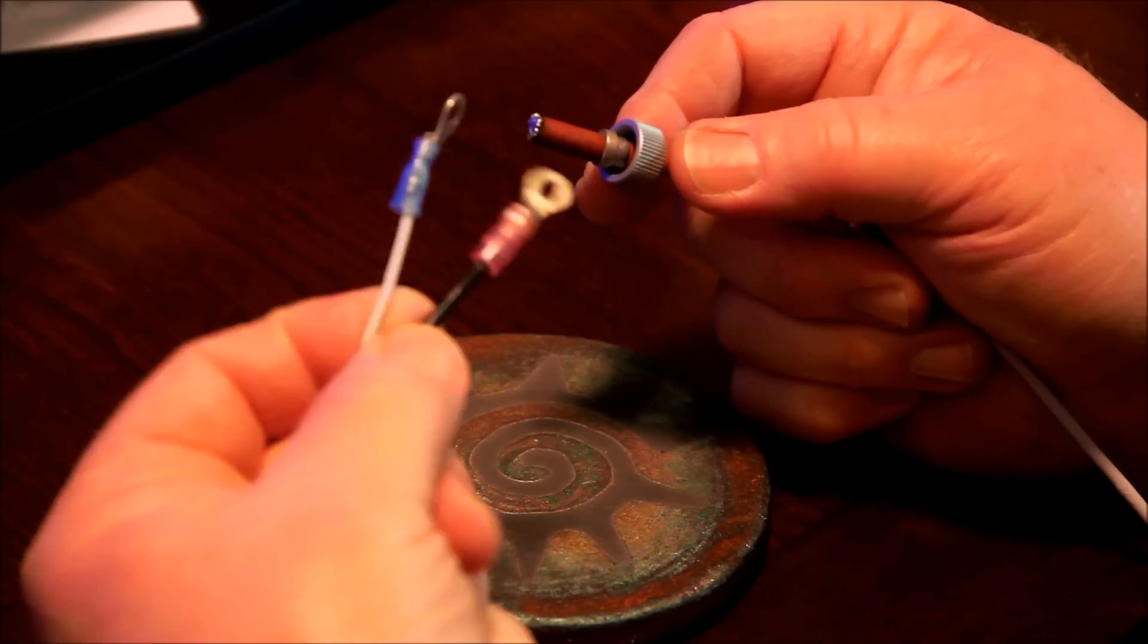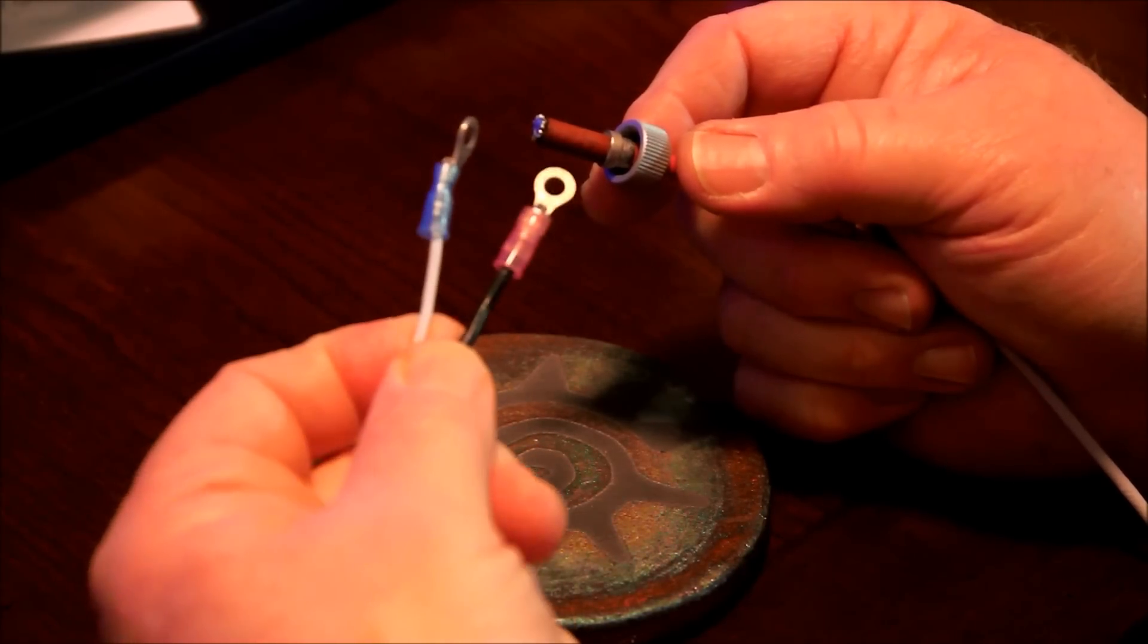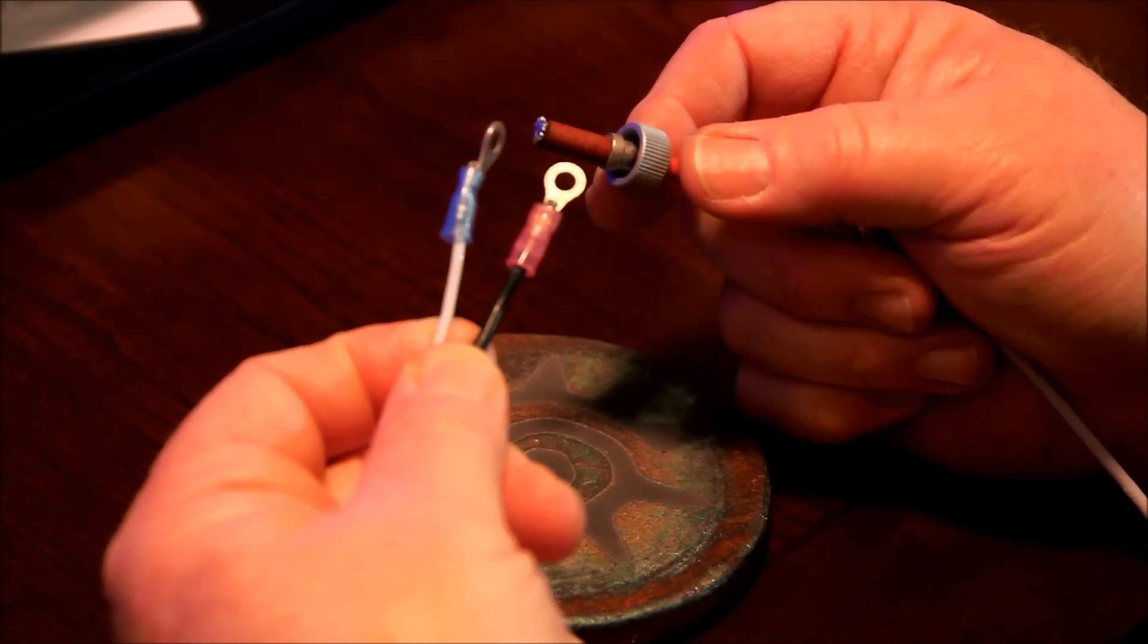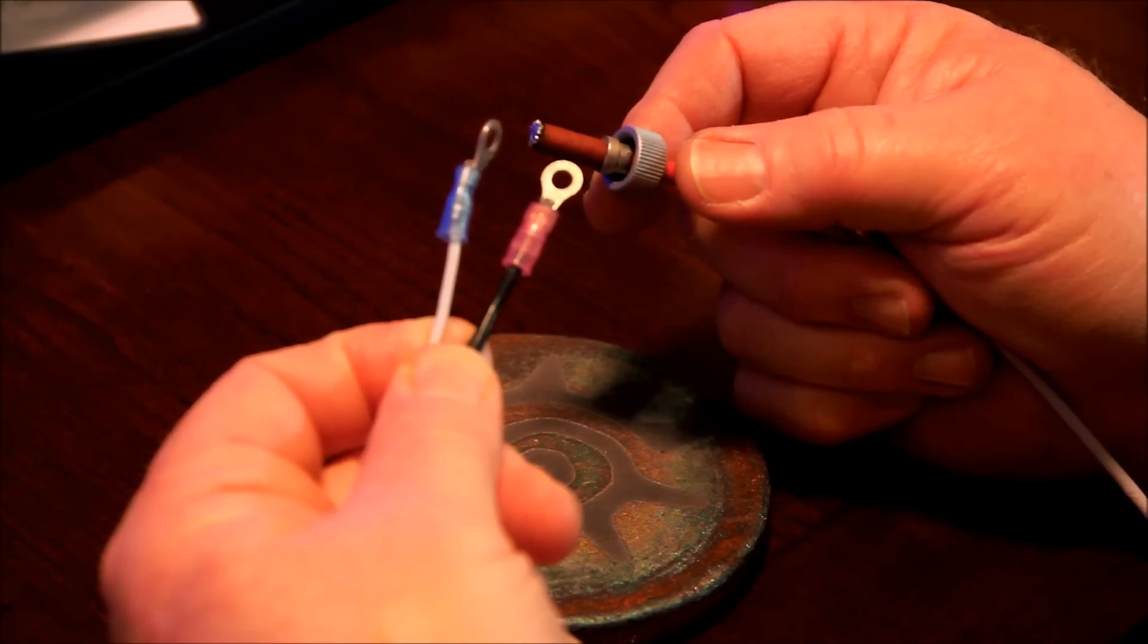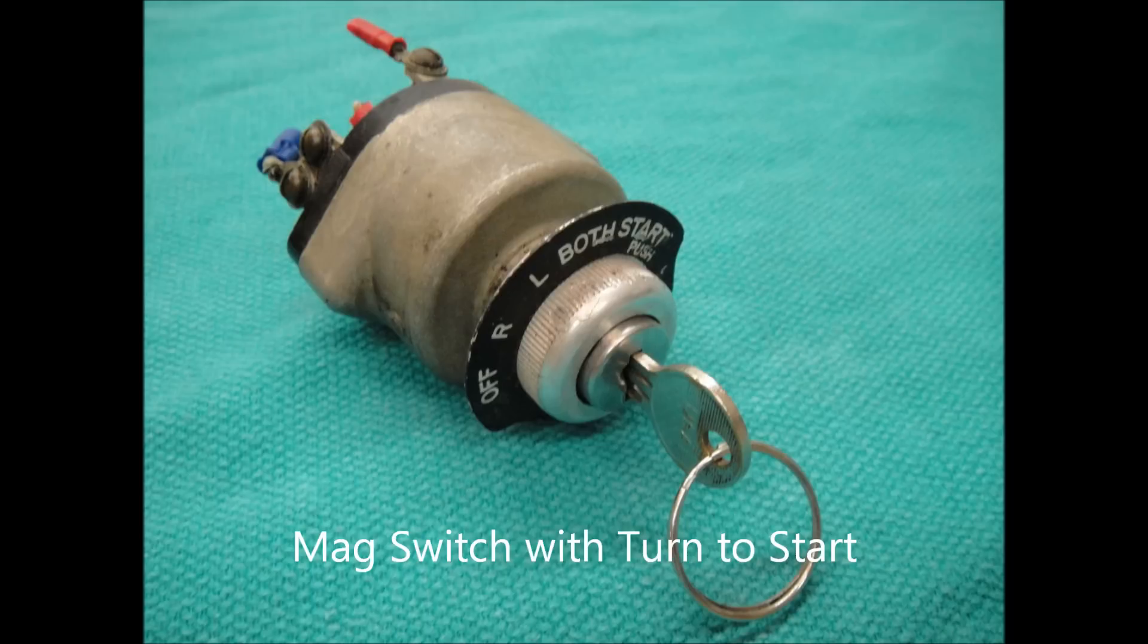The other end again has ring connectors that attach to the magneto switch. I'll show you an example of a mag switch.